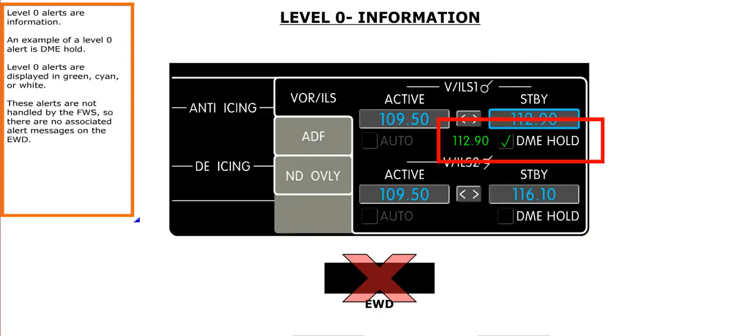Level 0 alerts are information. An example of a Level 0 alert is DME hold. Level 0 alerts are displayed in green, cyan, or white. These alerts are not handled by the FWS, so there are no associated alert messages on the EWD.